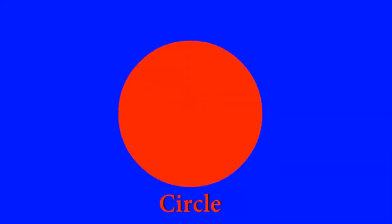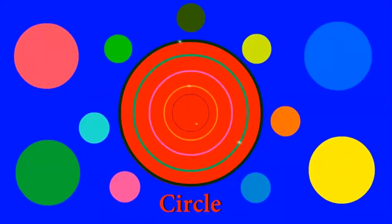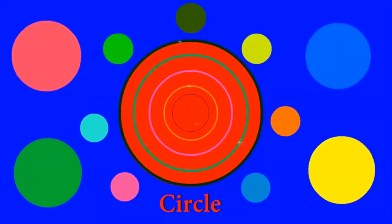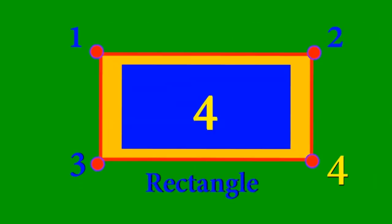No sides. A circle has no sides. Four sides. A rectangle has four sides.